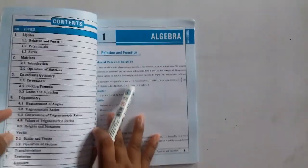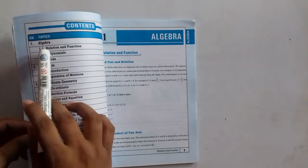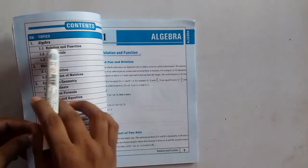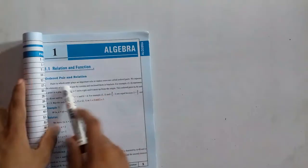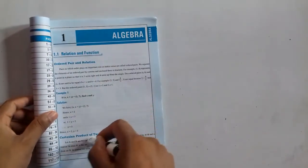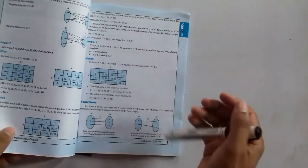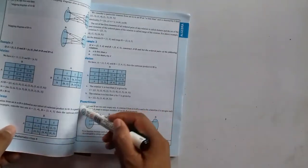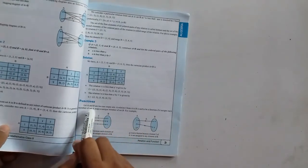In this video we are going to start unit 1 algebra and relation, lesson 1 relation and function. Some basic things like ordered pair, relation, Cartesian product and function. These things we have learnt already in class 6 and 7.